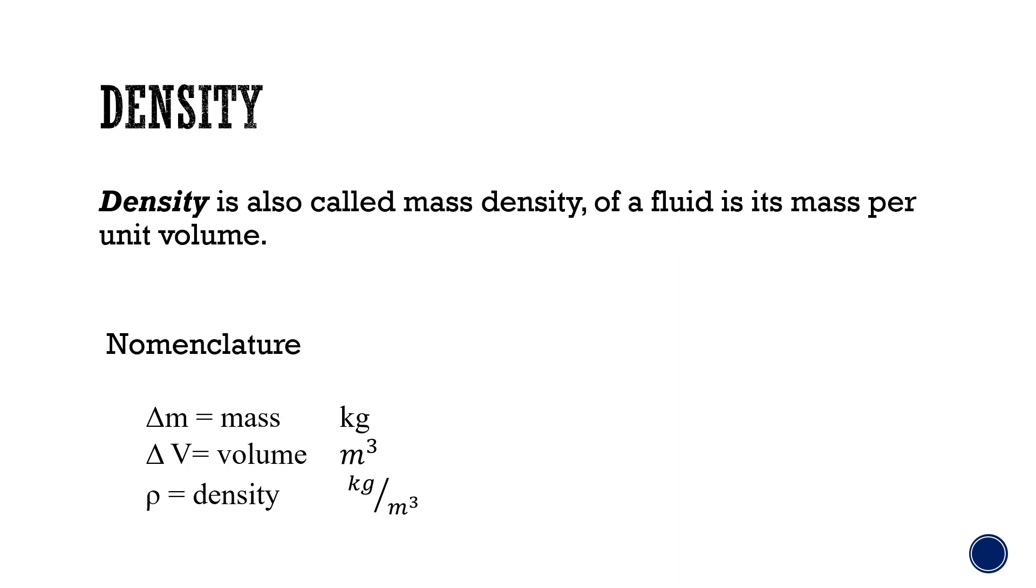For the nomenclature we will have three variables: m which is the mass and its units is in kilograms, V is the volume and its units are typically meters cubed, and lastly for density which is the Greek symbol rho and it is in kilograms per meters cubed.